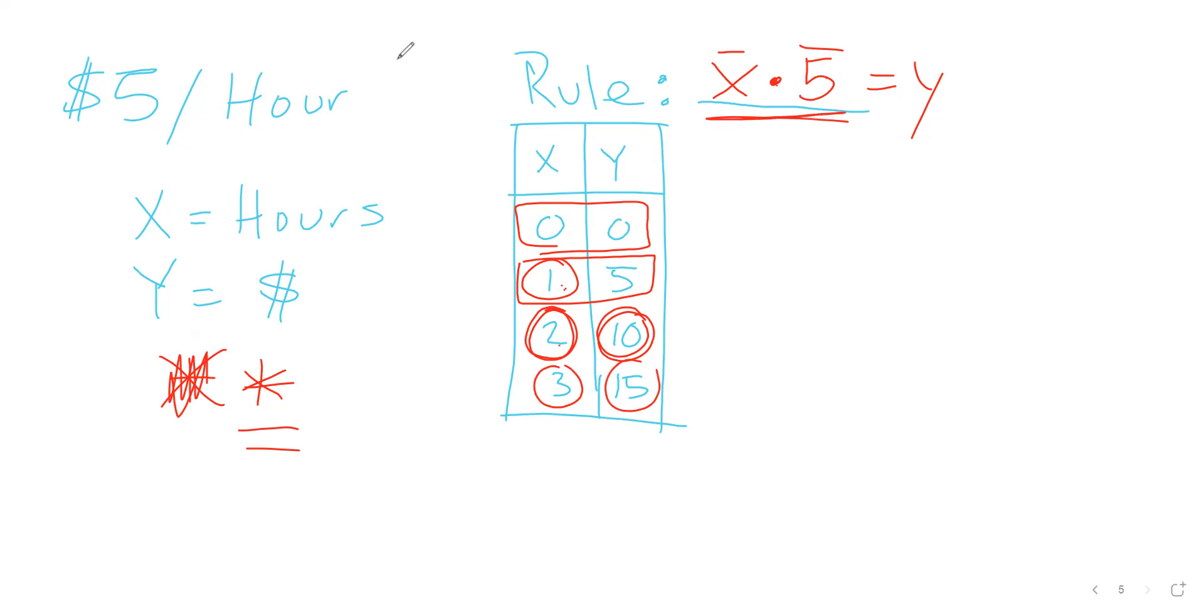And then here are my coordinates. I actually already have coordinates made. I don't even have to use the formula because I was just thinking logically about math. So if I work no hours, I get no money. If I work 1 hour, I get $5. If I work 2 hours, I get $10. And if I work 3 hours, I get $15. So why don't we graph what that would look like? Let's put that on a coordinate and make sense of it.